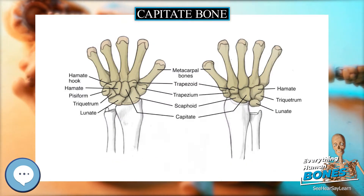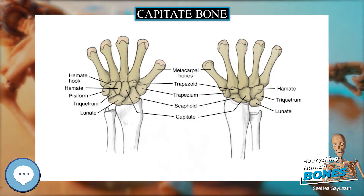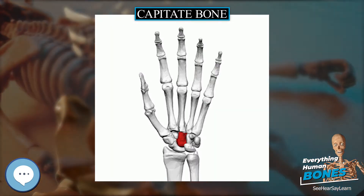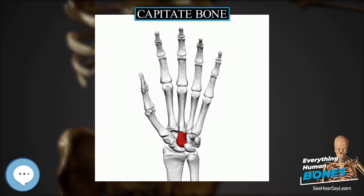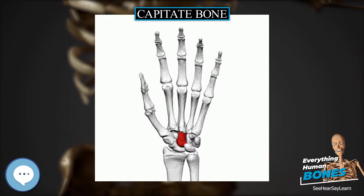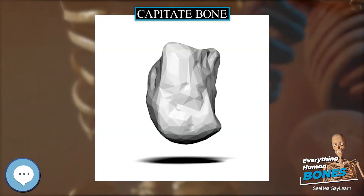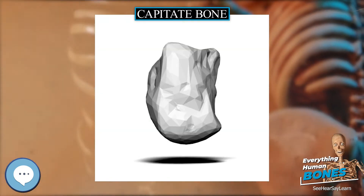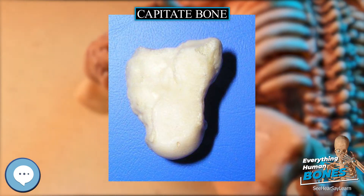The capitate bone is the largest of the carpal bones in the human hand. It presents, above, a rounded portion or head, which is received into the concavity formed by the scaphoid and lunate bones, a constricted portion or neck, and below this, the body.